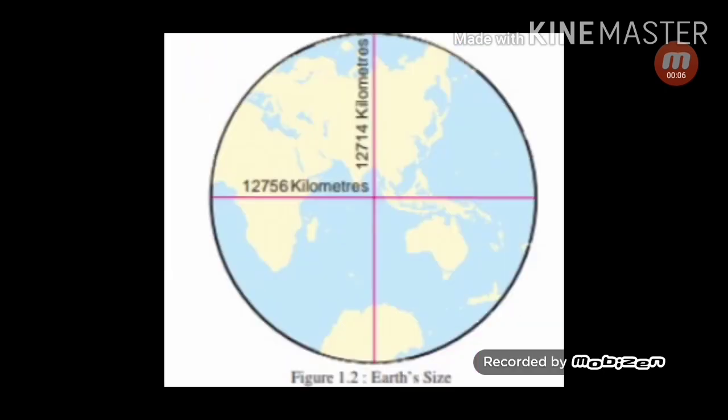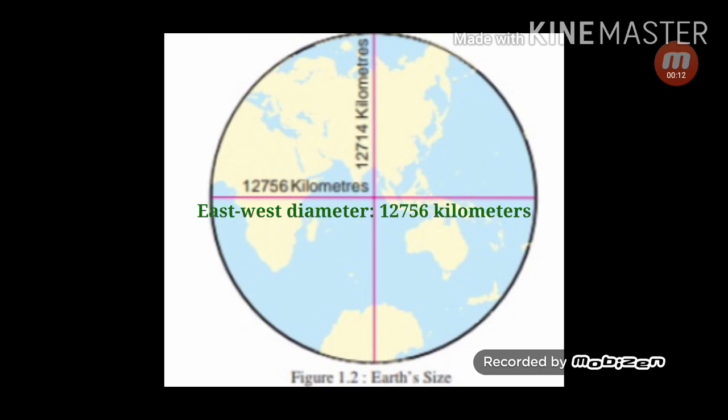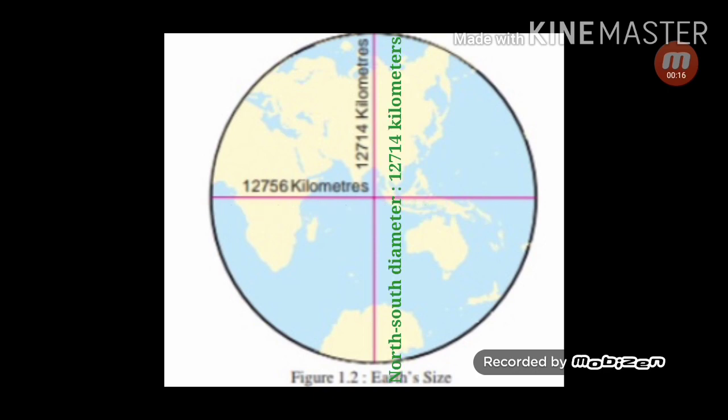Students, observe this figure. In this figure, you can see the lengths of east-west and north-south diameters of the earth. This will give you some idea about the size of the earth. Oceanic waters, uneven nature of the land, forests, innumerable islands of different sizes and buildings make it impossible to actually draw such lines on the earth.